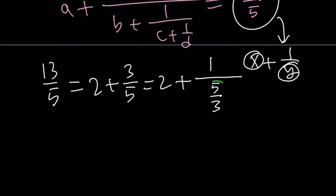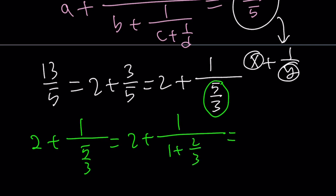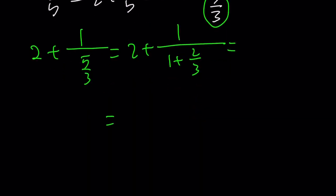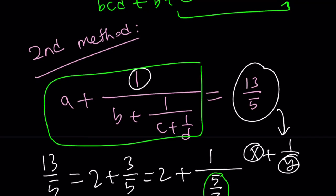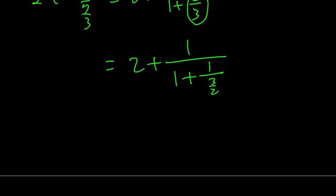We're just going to keep doing it until we get what we want. So 2 plus 1 over 5 thirds can be written as 2 plus 1 over, now 5 thirds is 1 plus 2 thirds. We're going to write this as 2 plus 1 over 1 plus 1 over 3 halves. I want my expression to look like this, with that many fraction bars. I have 1, 2, and 3 fraction bars.